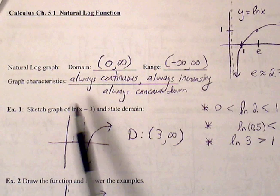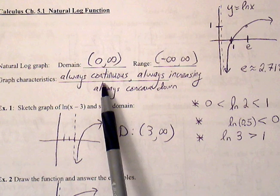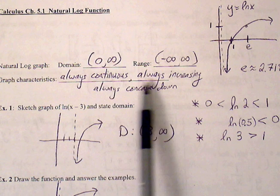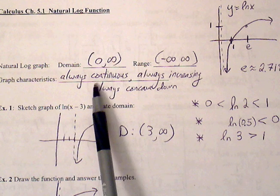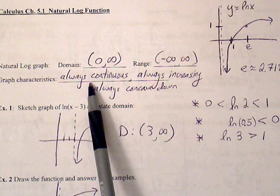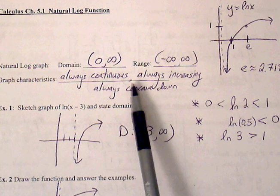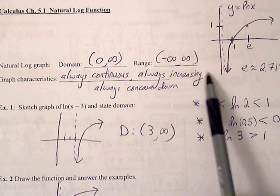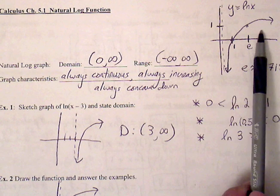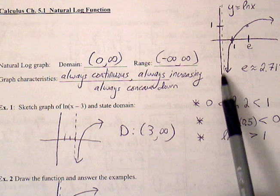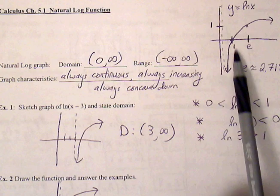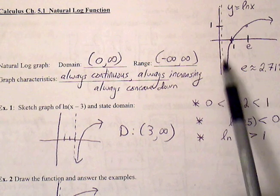A couple of graph characteristics is that this graph is always continuous within this domain. That means there's no breaks in the graph. Always increasing, the graph always has a positive slope, and always concave down. This graph is always going to have a second derivative that is less than 0.